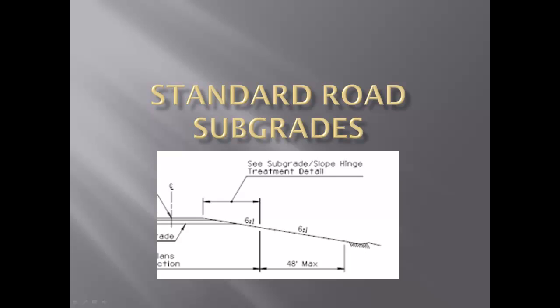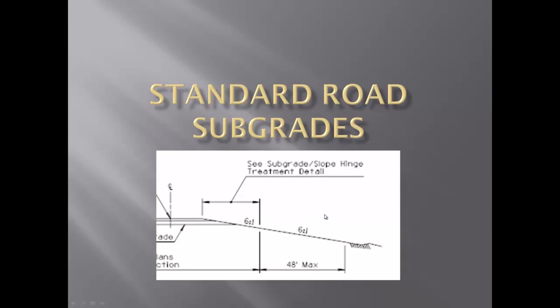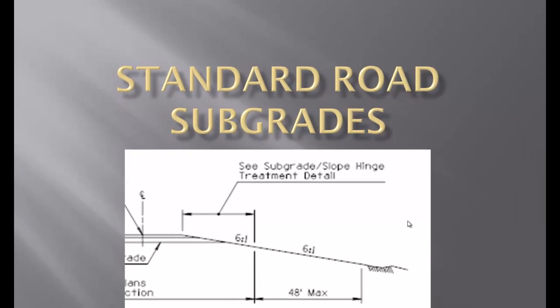First of all, let's look at what we consider a standard road subgrade. Let's take a look at this drawing, and basically what we have is a 2% road with a 6 to 1 slope that runs off it to the catch point. This is obviously a fill condition.